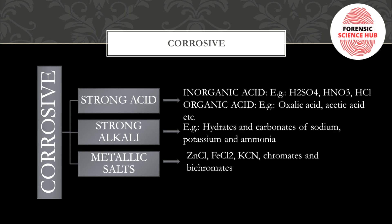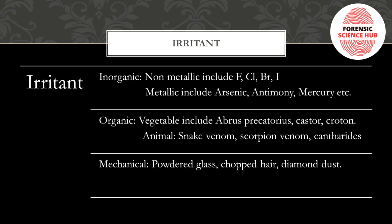Strong acids are further divided into inorganic acid and organic acid. Inorganic acids include H₂SO₄ (sulfuric acid), HNO₃ (nitric acid), and HCl (hydrochloric acid). Organic acids include oxalic acid, acetic acid, etc. Strong alkalis include hydroxides and carbonates of sodium, potassium, and ammonium. Metallic salts include zinc chloride, ferric chloride, KCN (potassium cyanide), chromates, and bichromates. All these are examples of corrosive poisons.